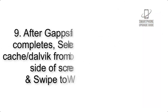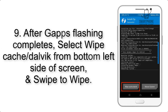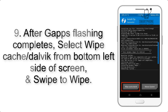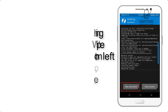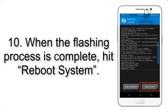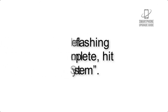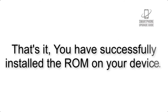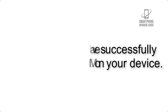Step 8: Flash the GApps zip package in the same manner. Step 9: After GApps flashing completes, select Wipe Cache and Dalvik from the bottom left side of the screen and swipe to wipe. Step 10: When the flashing process is complete, hit Reboot System. That's it — you have successfully installed the ROM on your device.